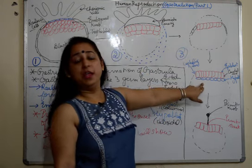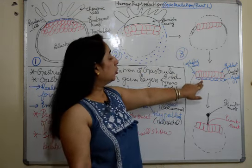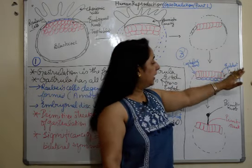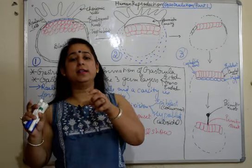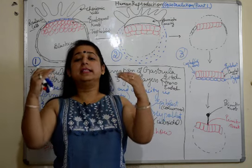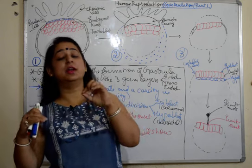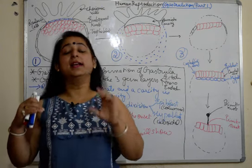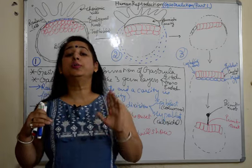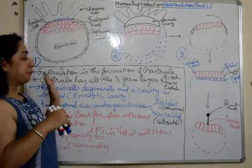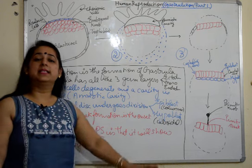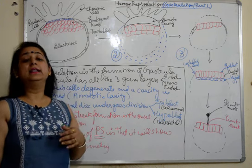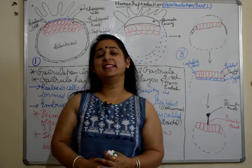To summarize: after implantation, the Rauber cells degenerate and the amniotic cavity forms. The embryonal disc undergoes delamination to form epiblast and hypoblast. From the caudal end, a depression forms called the primitive streak with a primitive knob, marking the onset of gastrulation. In our next video we'll discuss the formation of the endoderm. Keep watching, liking, sharing, and subscribing — thank you.